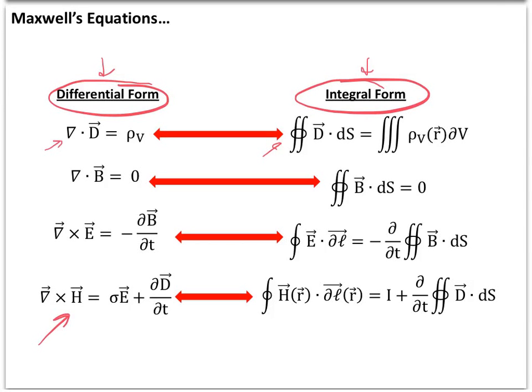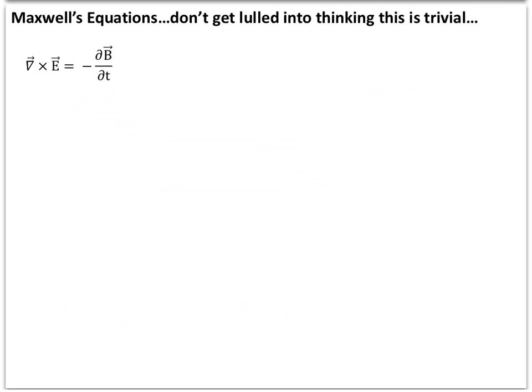It's actually fairly easy to memorize Maxwell's equations. For the power of these things — describing all electromagnetic propagation — they're really not that long. I'd like to do an example that demonstrates that the relatively simple-looking forms when written in vector calculus notation really aren't that simple. Don't get lulled into thinking that solutions to these are trivial just because the equations are short.